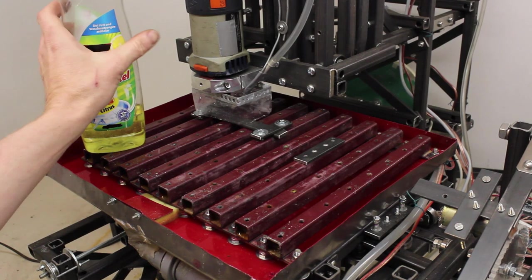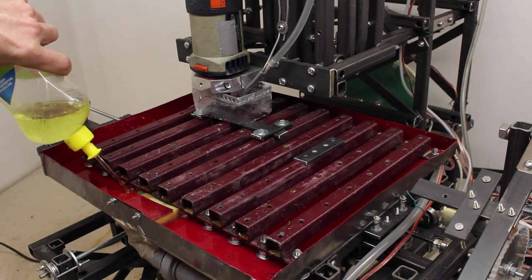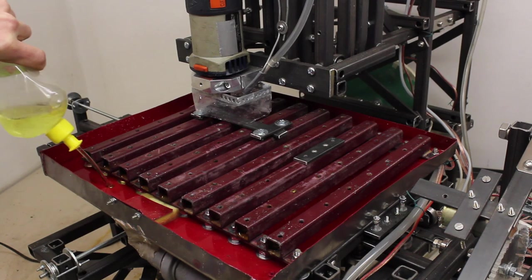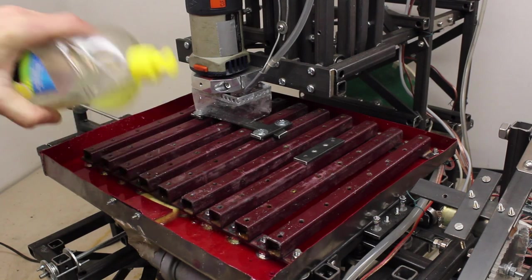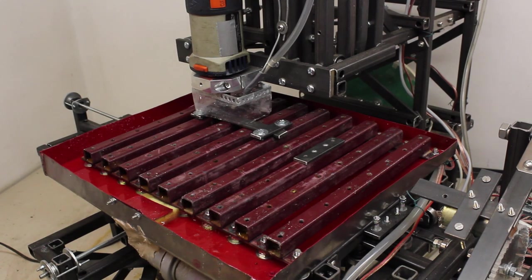When machining metals, the coolant is usually mixed with lubricant. Industrial cutting fluids are anything else but environmentally friendly. I am using 20% of common dish liquid instead.